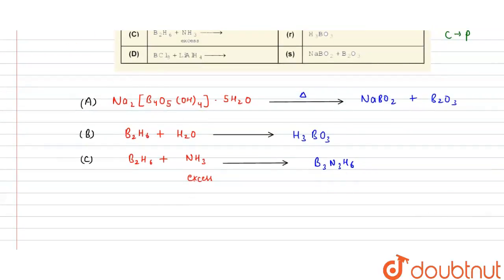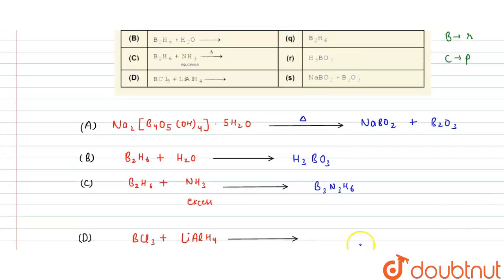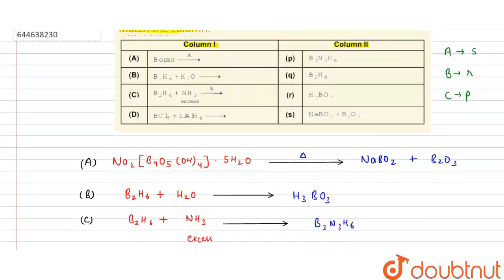Now D is BCl3 with LiAlH4. So BCl3 reacts with LiAlH4. Now what is the product of the reaction? The final product of this reaction is B2H6 plus LiCl plus AlCl3. So here only B2H6 is given, so we connect with Q. So the final answer, D connects with Q.